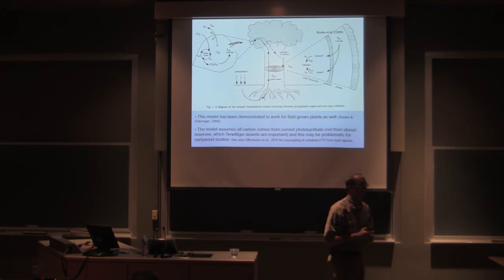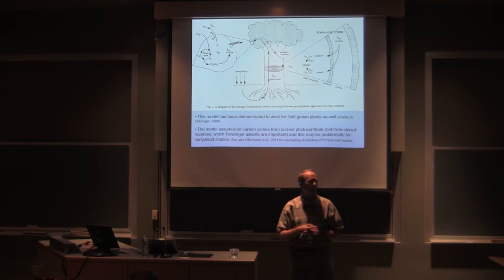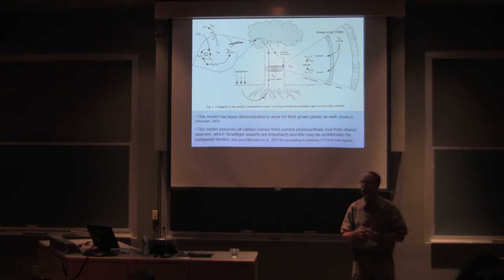So let's see if you, let's think about this for a second. Suppose I didn't want to do tree rings. What if I wanted to do leaf cellulose? What if I wanted to do leaf cellulose? What would be the change in my model?